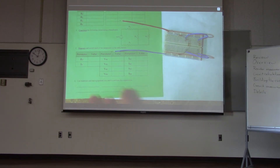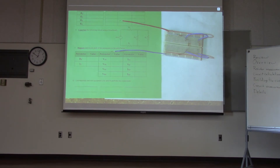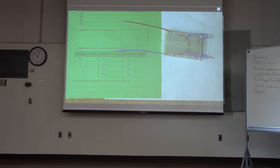To measure total current, pull out one of the jumper wires, plug your meter's jumper wire into that hole, and connect your other meter lead to the jumper wire you removed. With the power supply connected, this measures the current flowing back into the power supply.